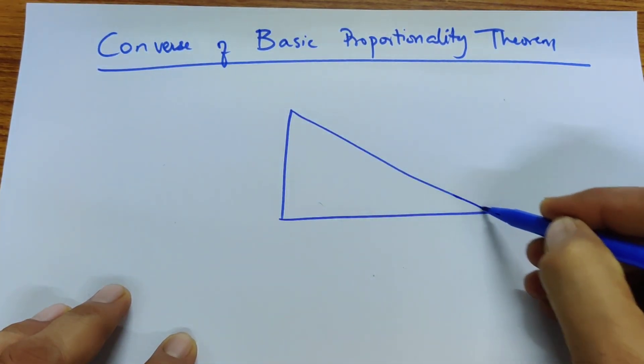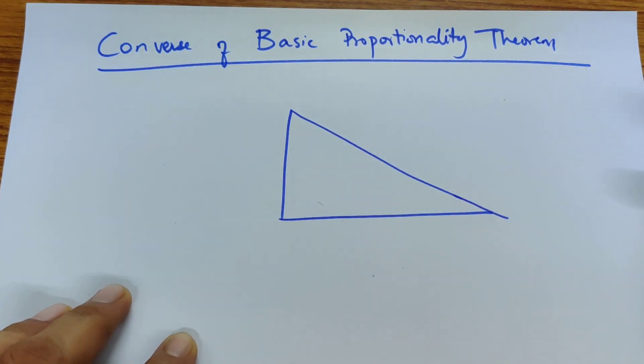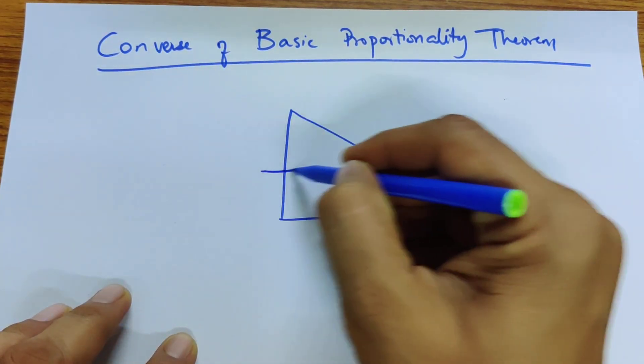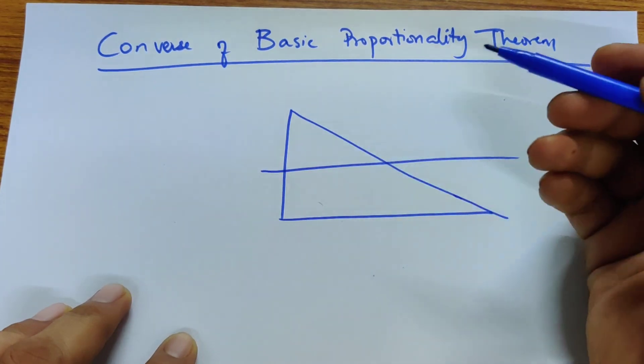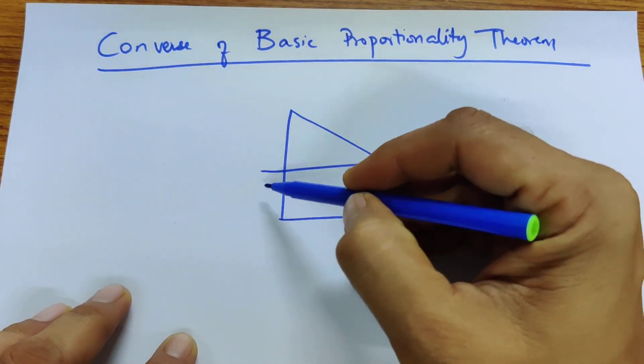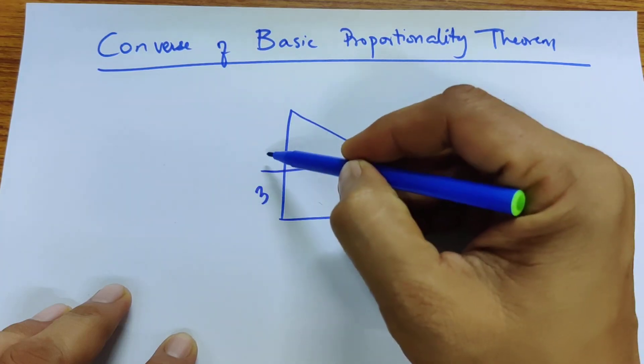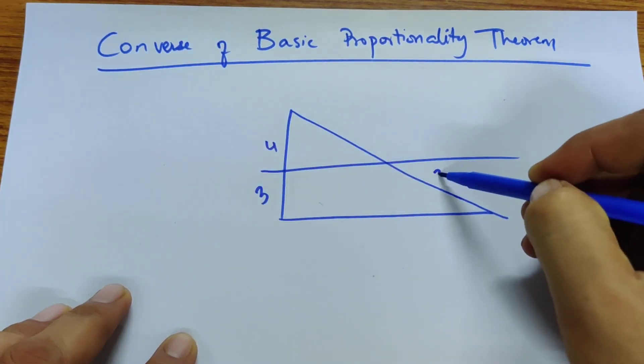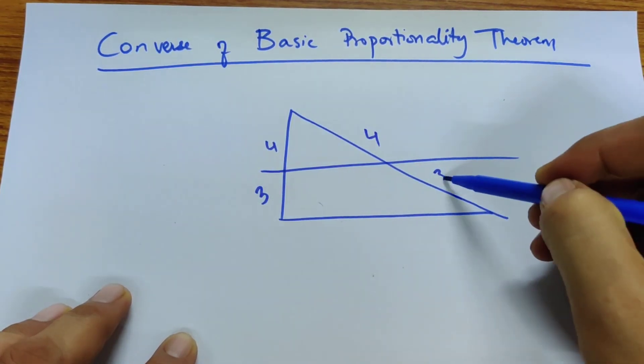it's not a right angle triangle, it's a triangle in which you are dividing the two sides, let's say, in 3 is to 4,